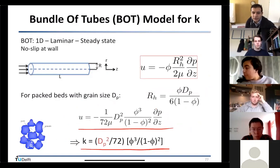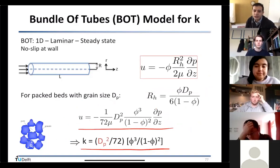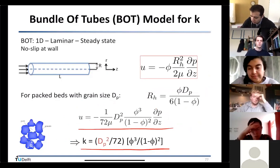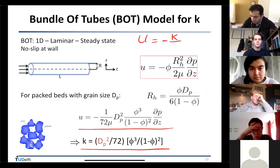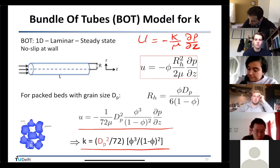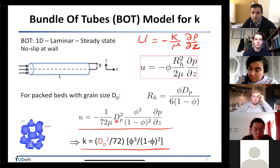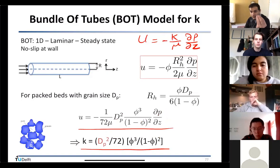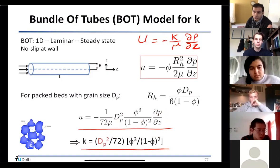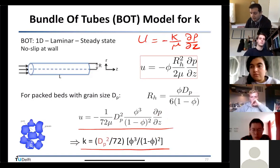Matching with Darcy's law u = −k/μ · (dp/dz), the permeability from bundle of tube theory is: k = φ³·dp² / (72(1−φ)²). With the simplest possible analysis — single tube → hydraulic radius → hydraulic radius of grains in a sand pack — we have found a formula for permeability.